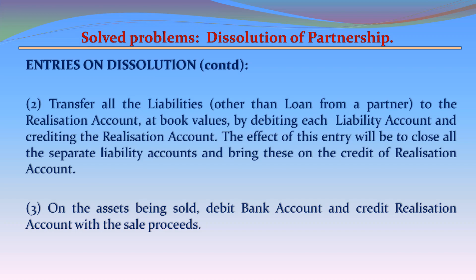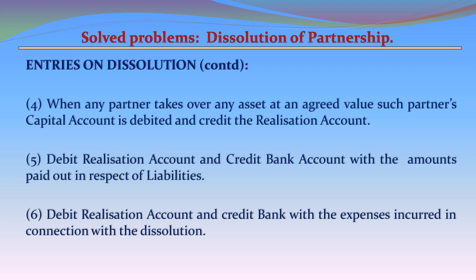Entry 3: On the assets being sold, debit Bank Account and credit Realization Account with the sale proceeds. Entry 4: When any partner takes over any asset at an agreed value, debit such partner's Capital Account and credit Realization Account. Entry 5: Debit Realization Account and credit Bank Account with the amounts paid out in respect of liabilities. Entry 6: Debit Realization Account and credit Bank with the expenses incurred in connection with the dissolution.